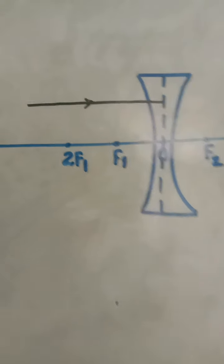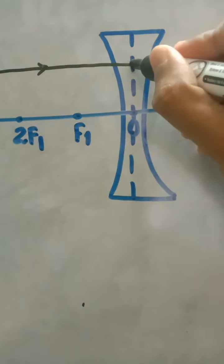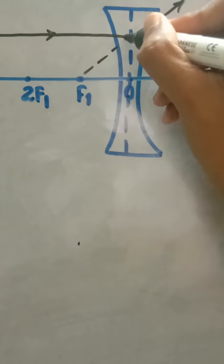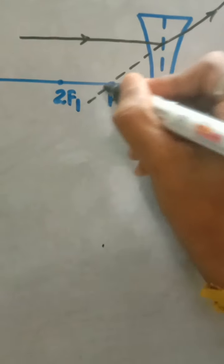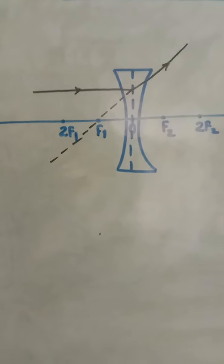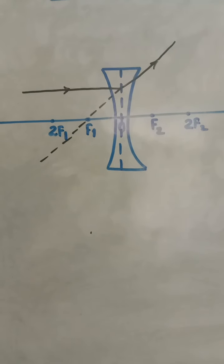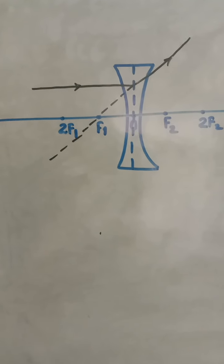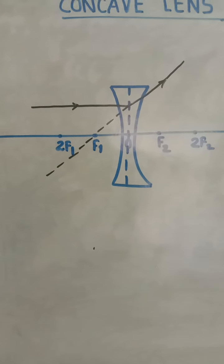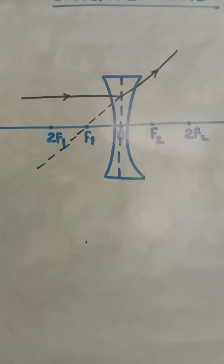So basically it's a diverging lens, so the ray will get diverged. Now if you extend this line, it will appear that the ray is passing through the focus. So a ray of light which is parallel to the principal axis appears to be coming from its focus after refraction through the lens.